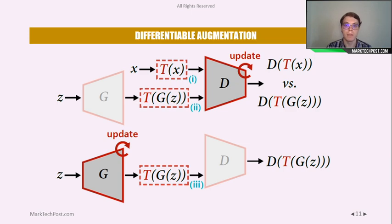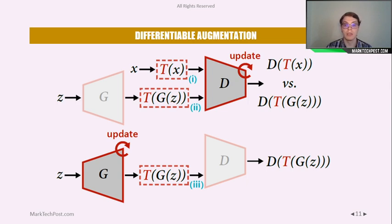The training approach using differentiable augmentation can be seen in this picture. In the first part, the discriminator is trained using augmented real images and augmented fake images as inputs. In the second part of the training, the generator is updated and trained using the augmented output and the response from the discriminator.